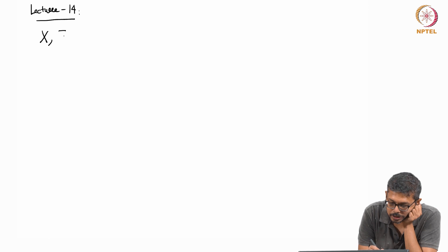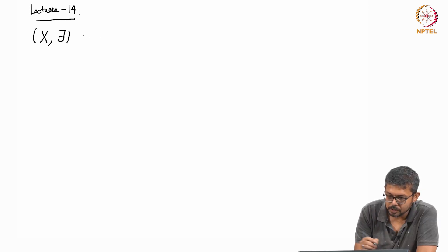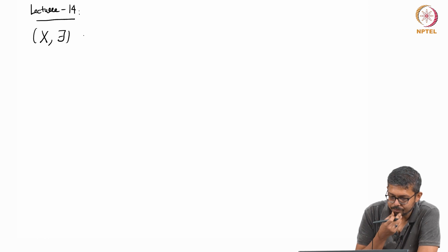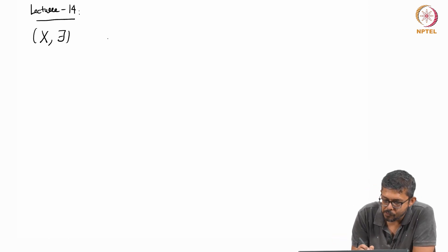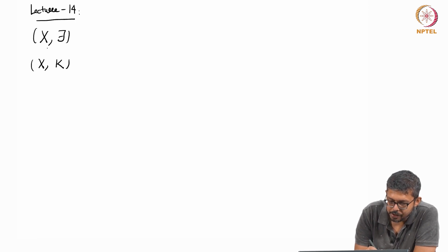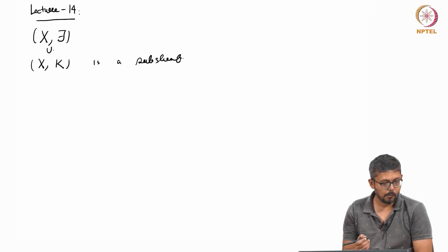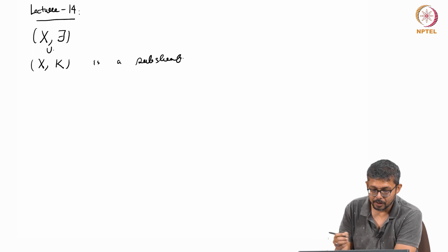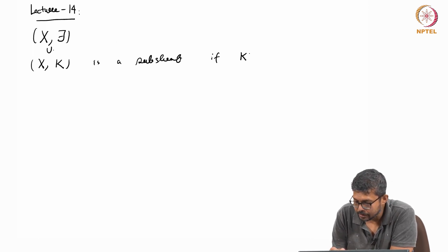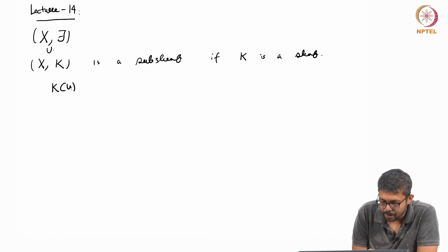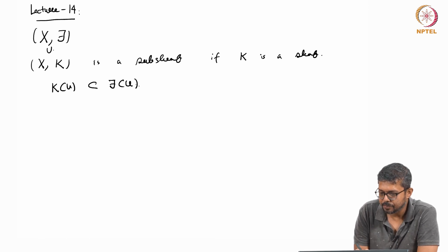If you have a shift — suppose x is a topological space and you have a shift on x — then we define a sub-shift. We say x comma k is a sub-shift if k is a shift, plus there is an inclusion map: k of u is a sub-object of phi for all u.